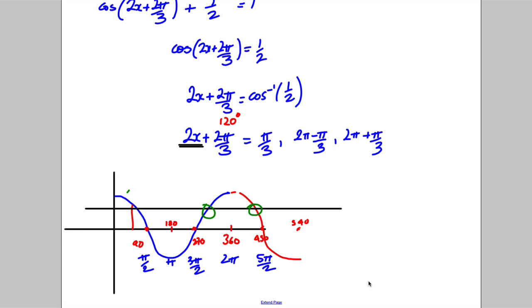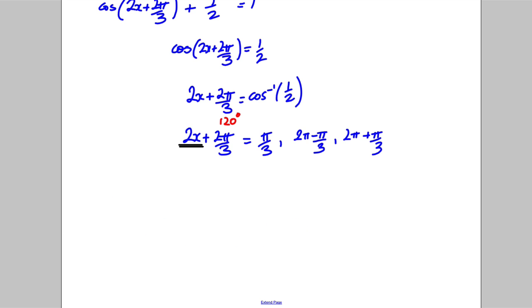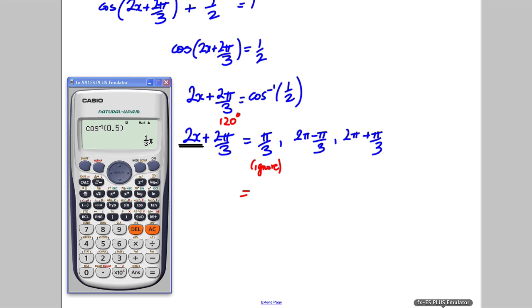I'm going to subtract the 2 pi by 3 off everything and divide by 2. Now clearly subtracting the 2 pi by 3 off here will give me no answer, so I can ignore this one because it will be outside my range.